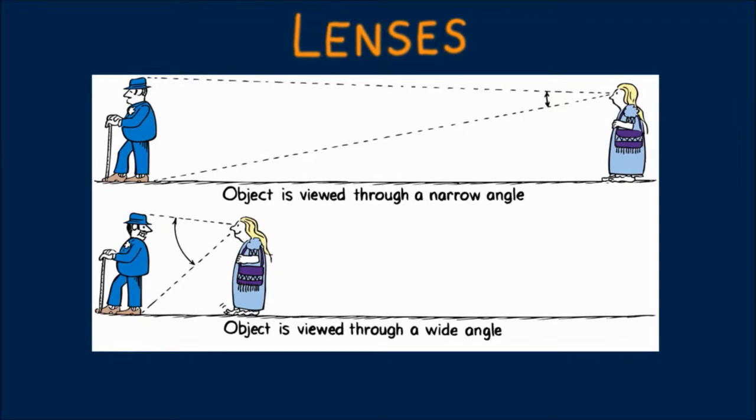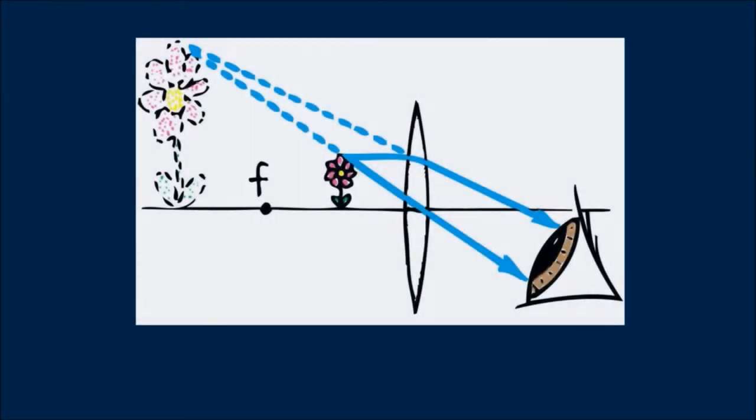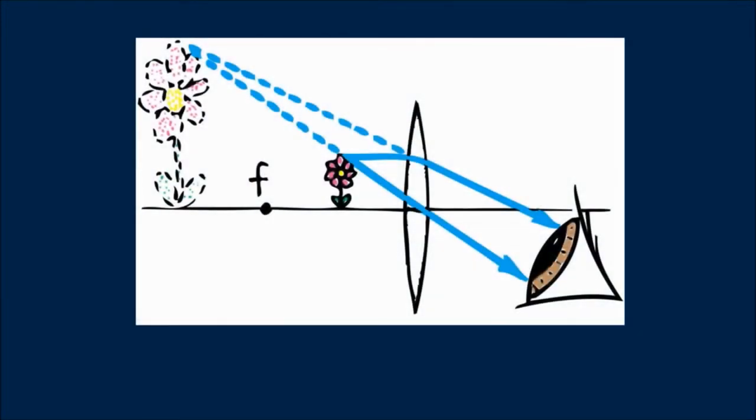So, to magnify something, you need to increase the angle through which you view it. To see the details of a small object like this flower, get close for a wide angle view. If you find that your eye can't focus when too close, a converging lens provides an enlarged, right-side-up image only when the object is inside the focal point, as we see here.